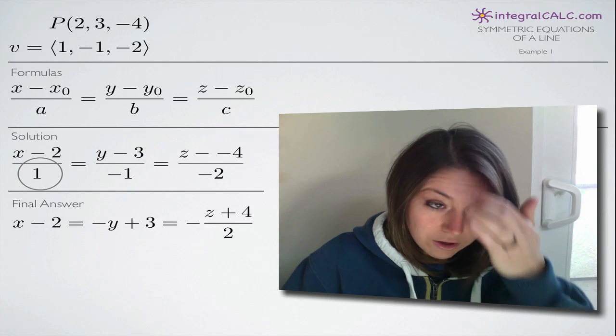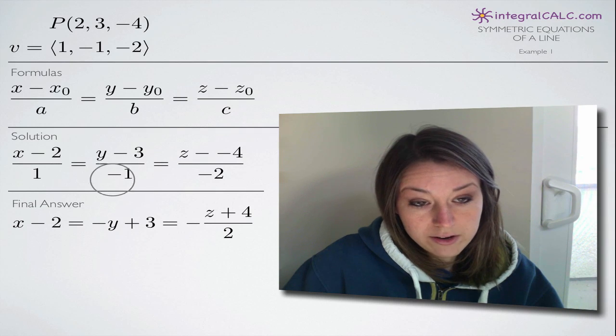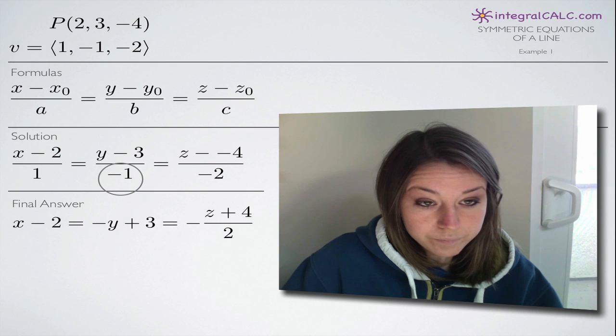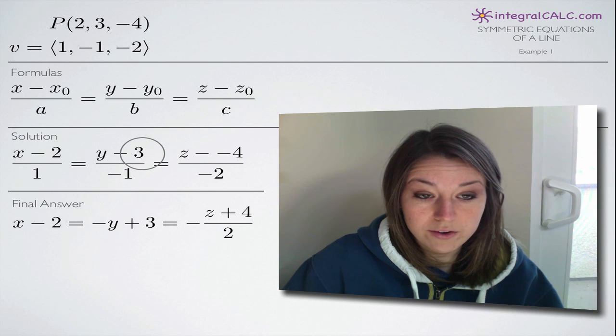Obviously the 1 in the denominator is going to go away—it's redundant. The negative 1 in the denominator here is going to flip the sign on both the y term and the negative 3 term. So instead of y minus 3, we're going to end up with negative y plus 3.